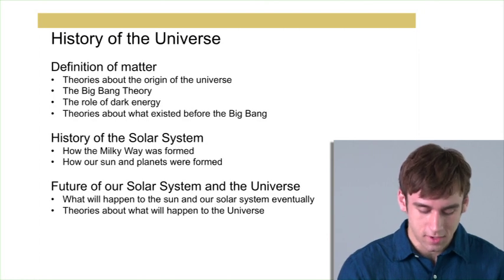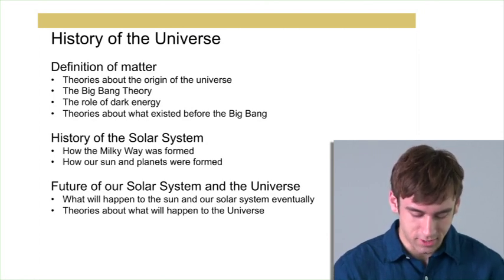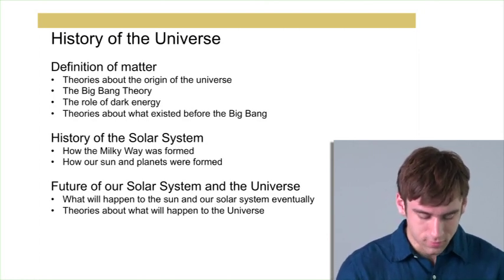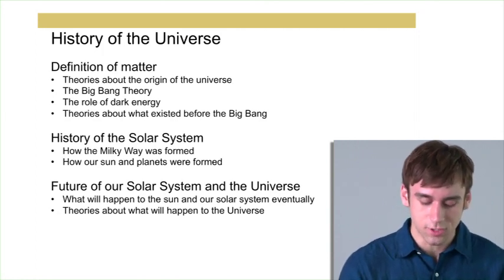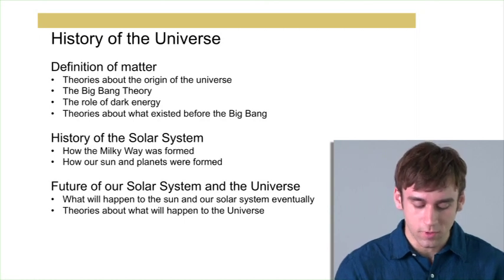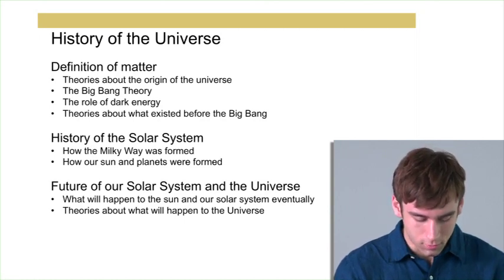Next, I'm going to talk about how our solar system was being developed when the universe was cooling 9 billion years later. In conclusion, I'll talk about how the sun will be transformed into a red giant.